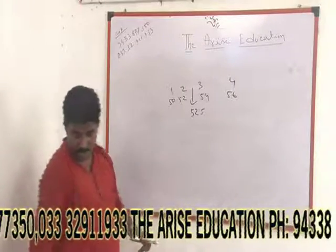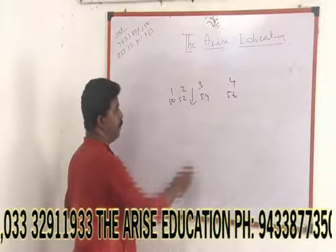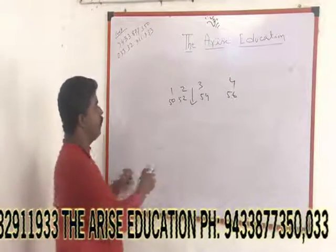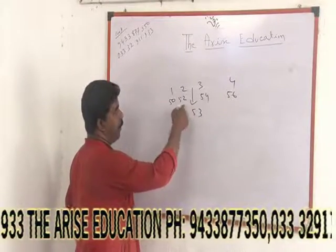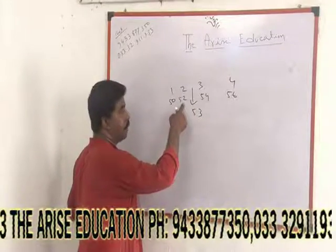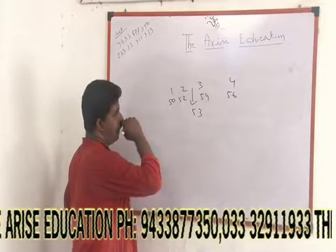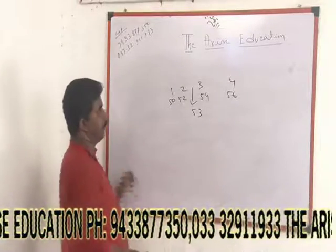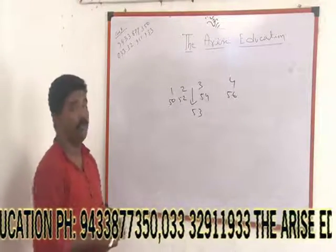This is 53. If you look at the average of 52.5, you can see 53. Then the even numbers are 52, then 50, then 54, then 56. That's how you get the answer.